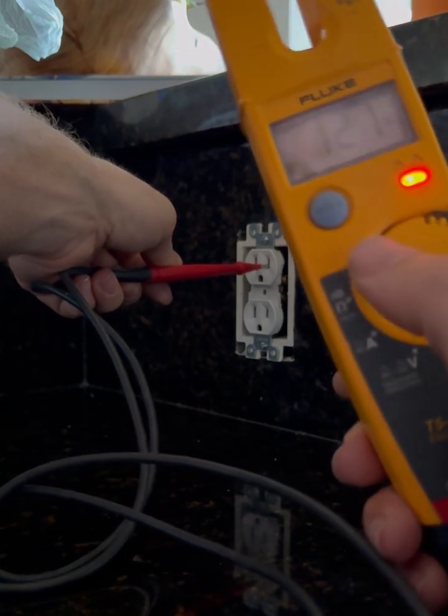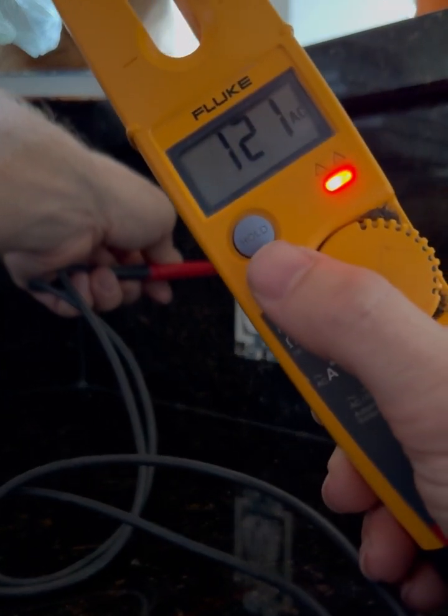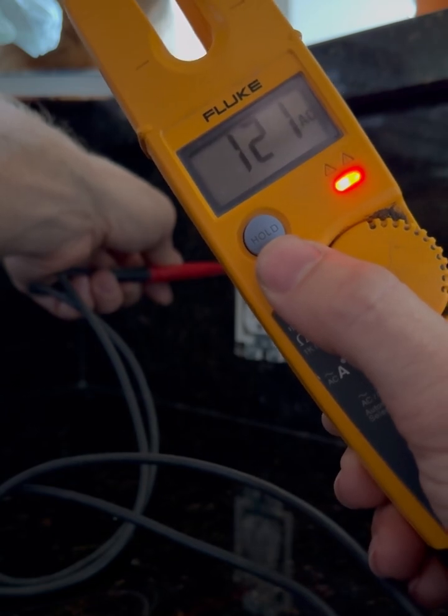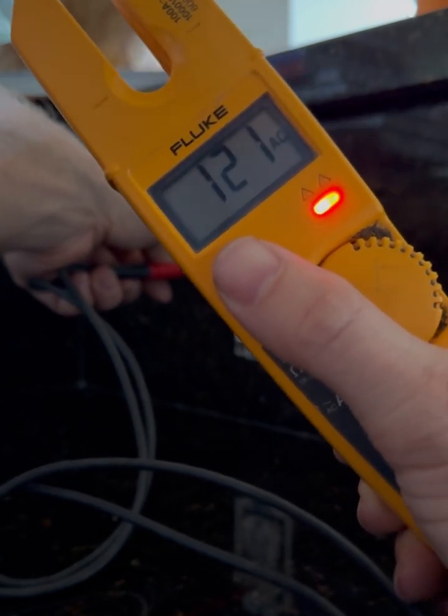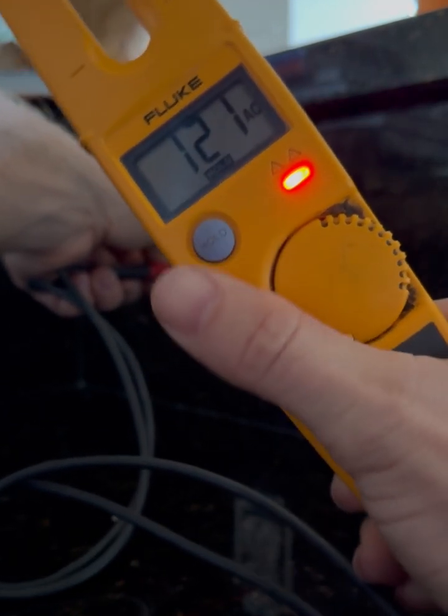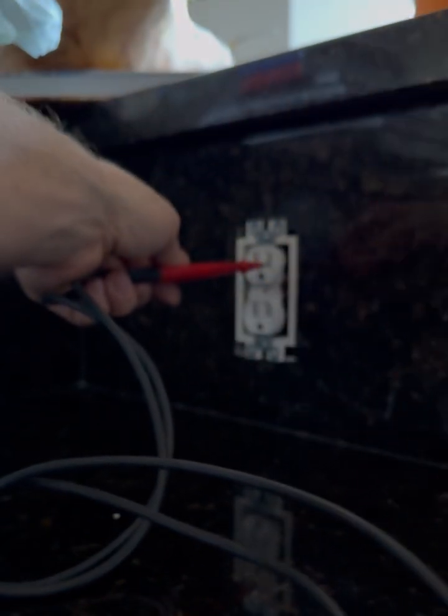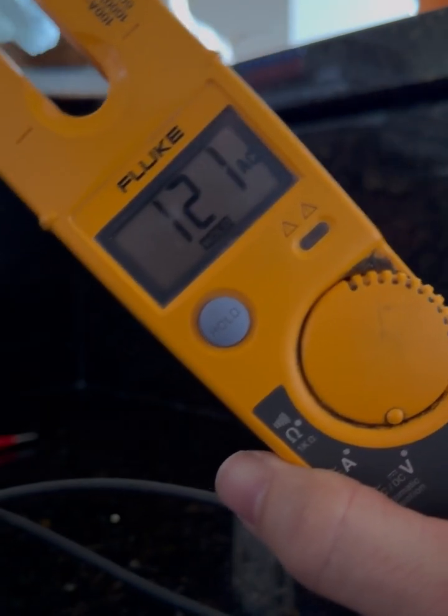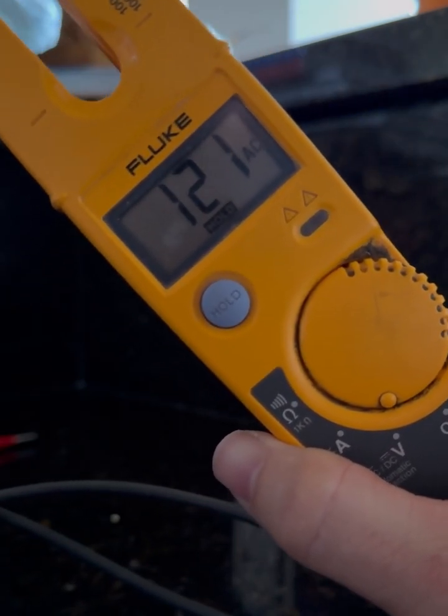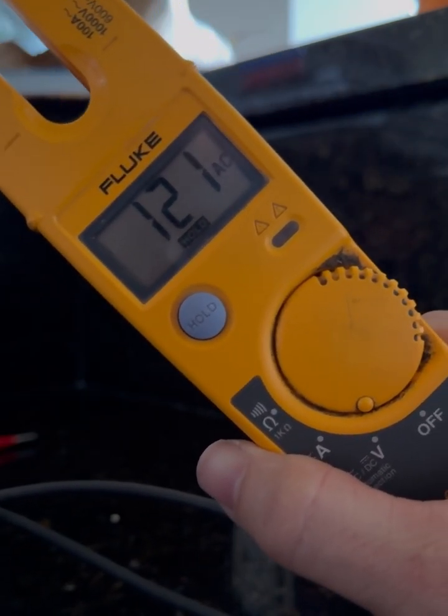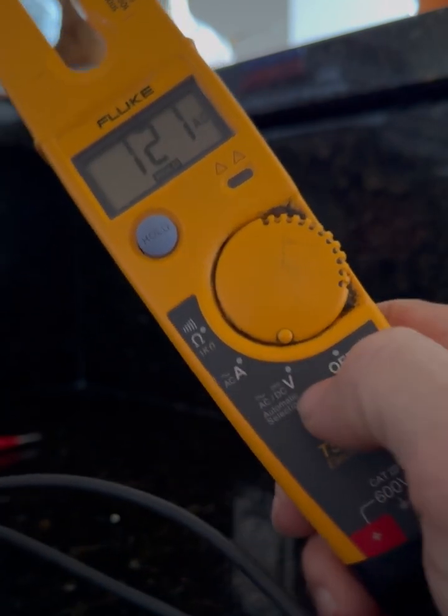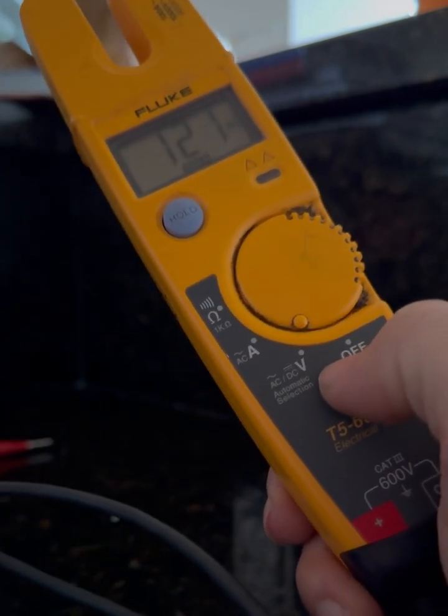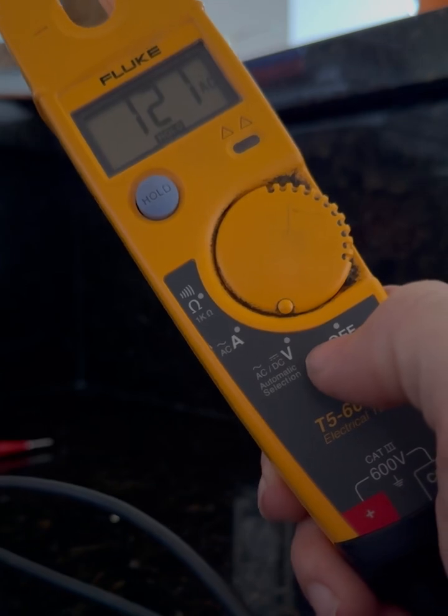And once you've tested your voltage and everything looks good, another function that I like sometimes, if it's in a tough spot, you can't really see it, you can press the hold button, just tap it, it'll beep. And then when you remove the prongs, it will hold the voltage so you could see it on the screen after you're done testing and you don't have to stay connected to the circuit. So that is the voltage feature, obviously extremely useful for doing electrical work.